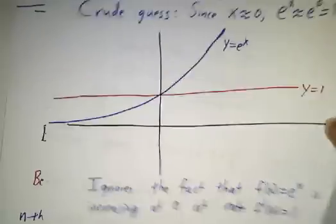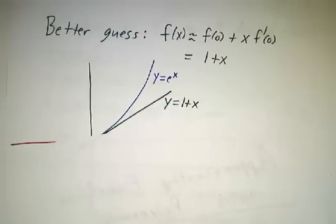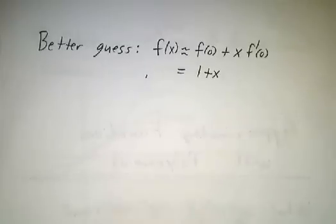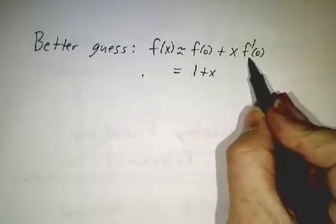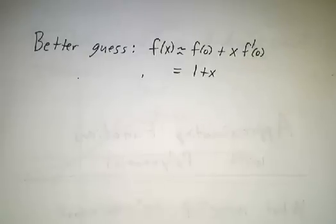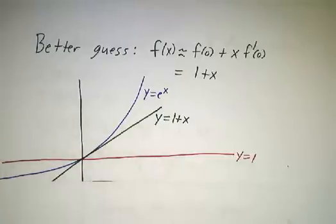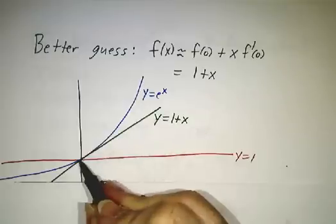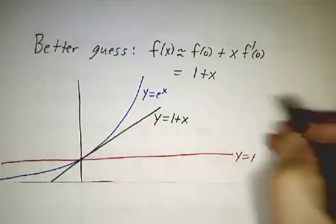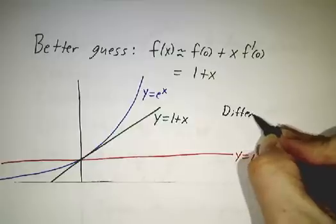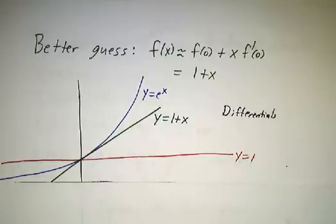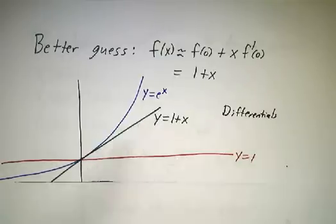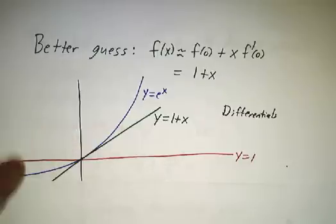So you might try a better guess. The better guess would be to track the tangent line to say f is roughly the starting value plus how far you've gone times the rate of change. That's 1 plus x. And a picture of that would look like this. Here we have our curve y equals e to the x, and the line y equals 1 plus x is the tangent line. And we've done a whole section on differentials and linearization that showed us how to get approximate values by tracking out the tangent line. So this is better than just saying, oh, it must be 1.